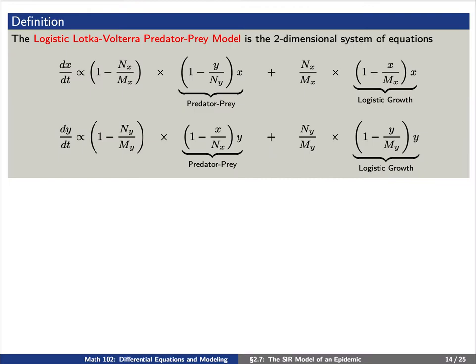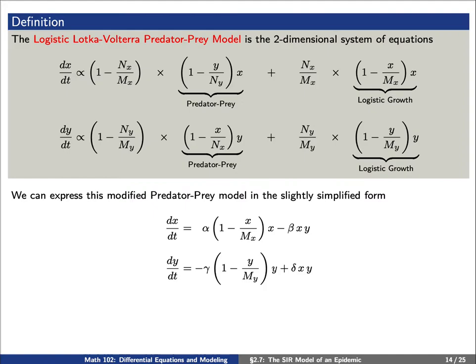Putting all of this together, we find the logistic Lotka-Volterra predator-prey model. It's a two-dimensional system of first-order equations. The idea is that we can express them as some type of linear combination between a predator-prey model and a logistic growth model. We can express this modified predator-prey model in a slightly simpler form. Here, M_x and M_y are the carrying capacities, and alpha, beta, gamma, delta are just some constants of proportionality.